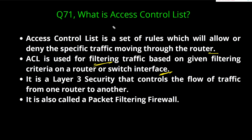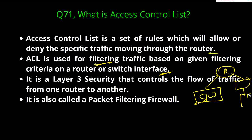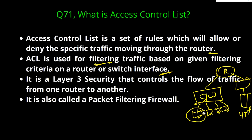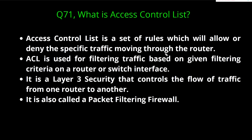For example, suppose this is my network — switch one, a router, another switch, an HTTP server, and 100 users. Out of 100 users, suppose I want one specific user to never access my HTTP server. I can create an ACL on the router and drop the traffic of that user whenever they try to access the HTTP server. So ACL is a set of rules which allows or denies specific traffic moving through the router.